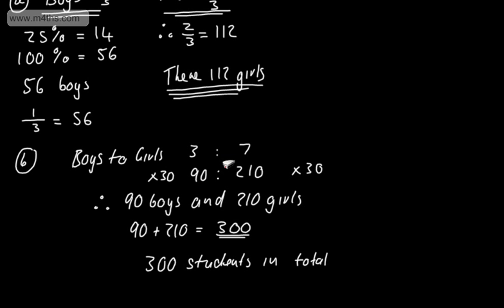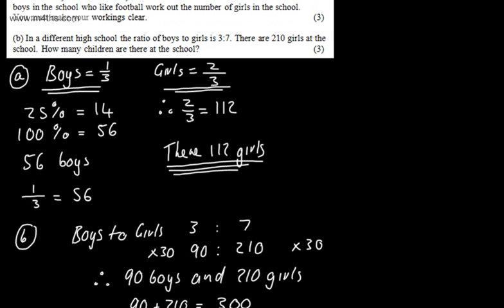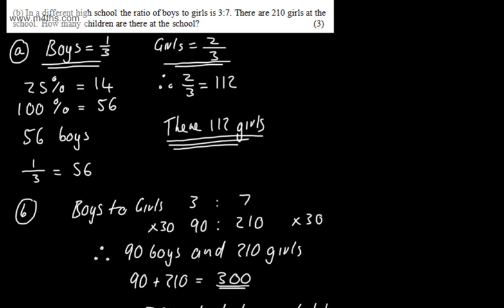Boys to girls is three to seven. I've multiplied up now to get an equivalent ratio. I've multiplied this one by 30, so I need to do the same here. Therefore, 90 boys and 210 girls, we've added them together to get 300. So, three marks in part B.